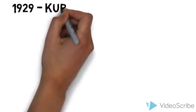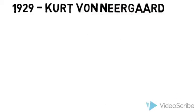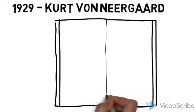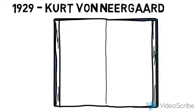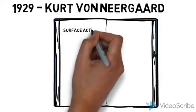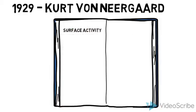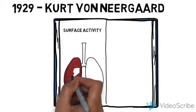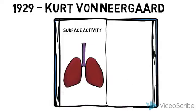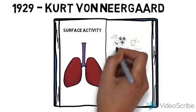In 1929, Kurt Von Niergaard wrote a paper about surface activity in the lungs. He deduced that increases in volume were less than one might expect from the lung, and this may be as a result of surface tension exerted by the liquid substance lining the actual alveoli.